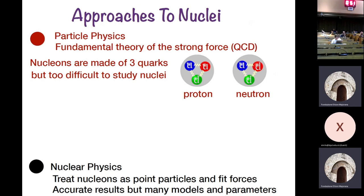Lots of people make their living doing nuclear physics, so they must be doing something. A typical approach in nuclear physics is to completely ignore the fundamental theory. You treat nucleons as point particles and write down some complicated forces between these point particles with lots of parameters — typically about 50 parameters. There's loads of experimental data, so you can fit all these 50 parameters and then calculate anything you'd like. So you can see there are two quite extremes: one involves lots of phenomenology and parameter fitting; one is very fundamental but you can't calculate anything. There looks like a bit of a gap.